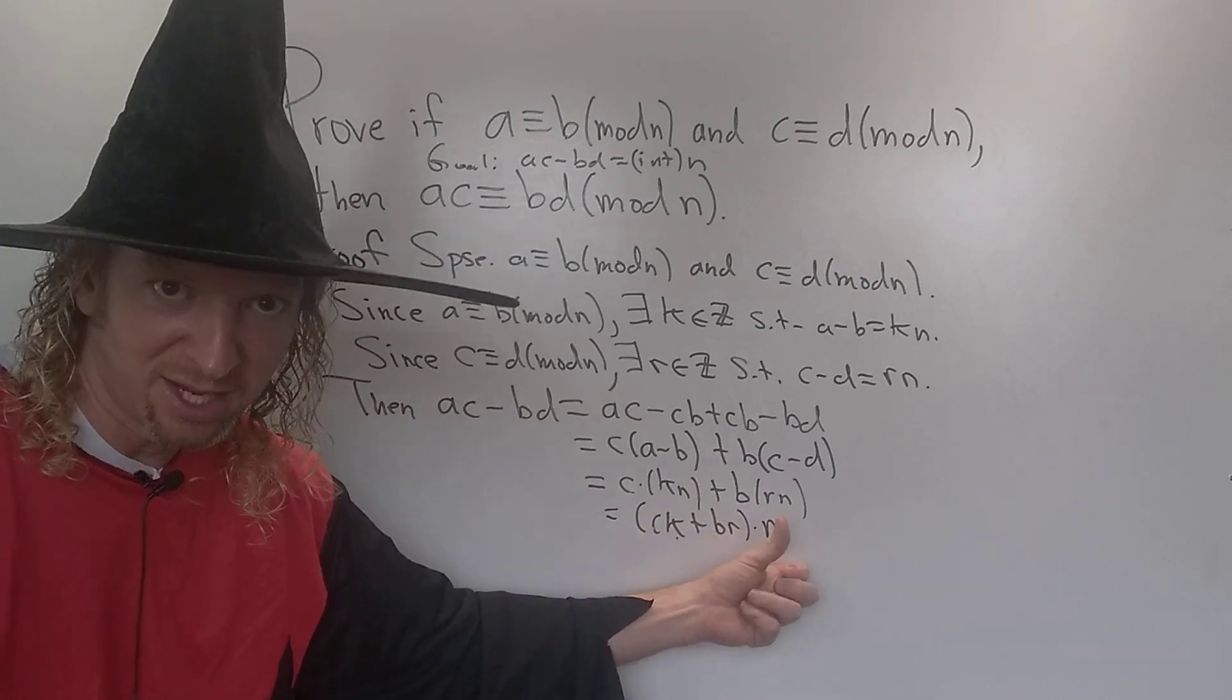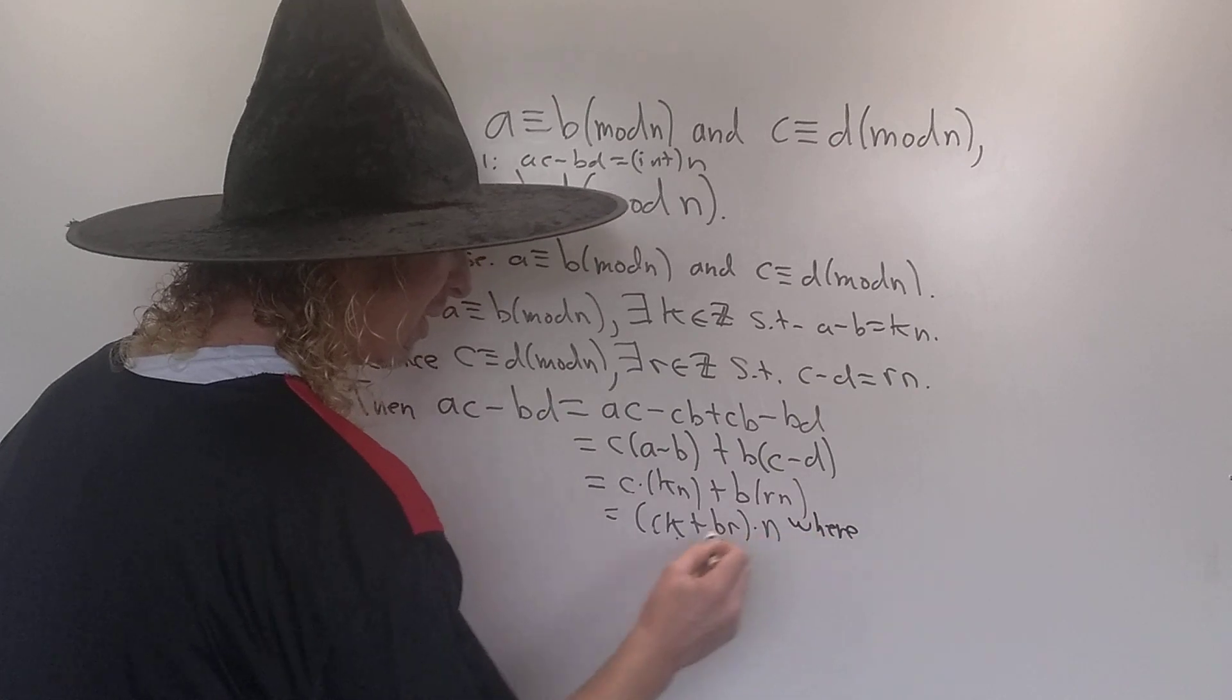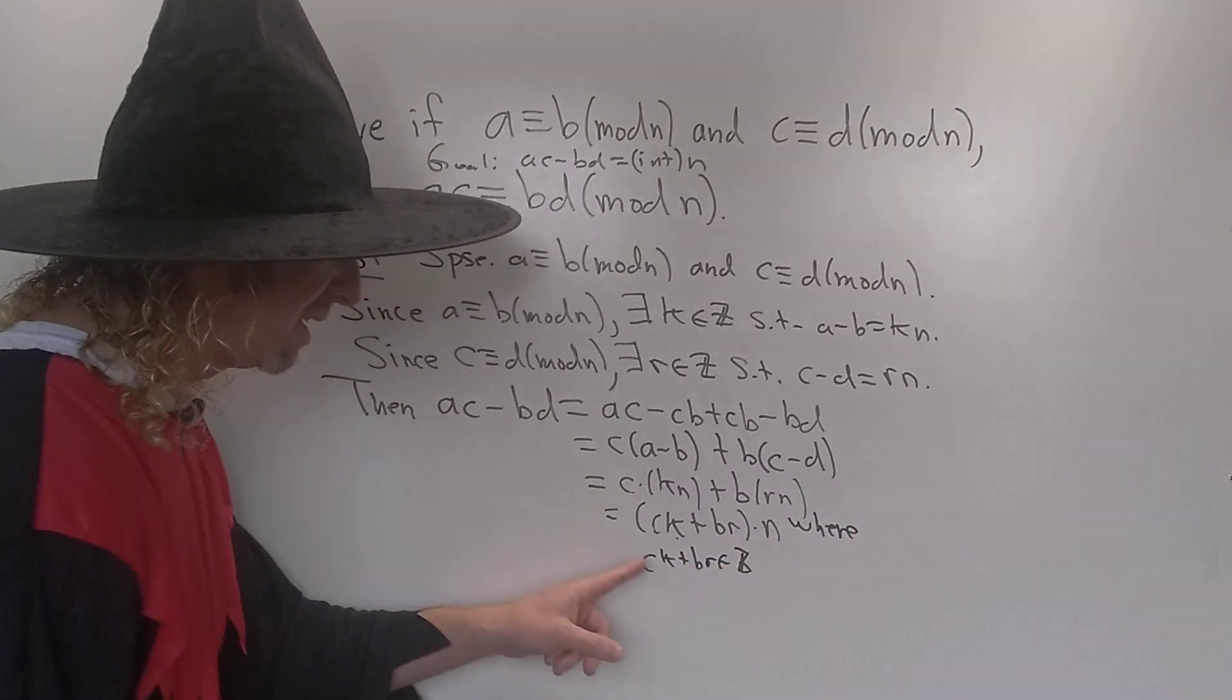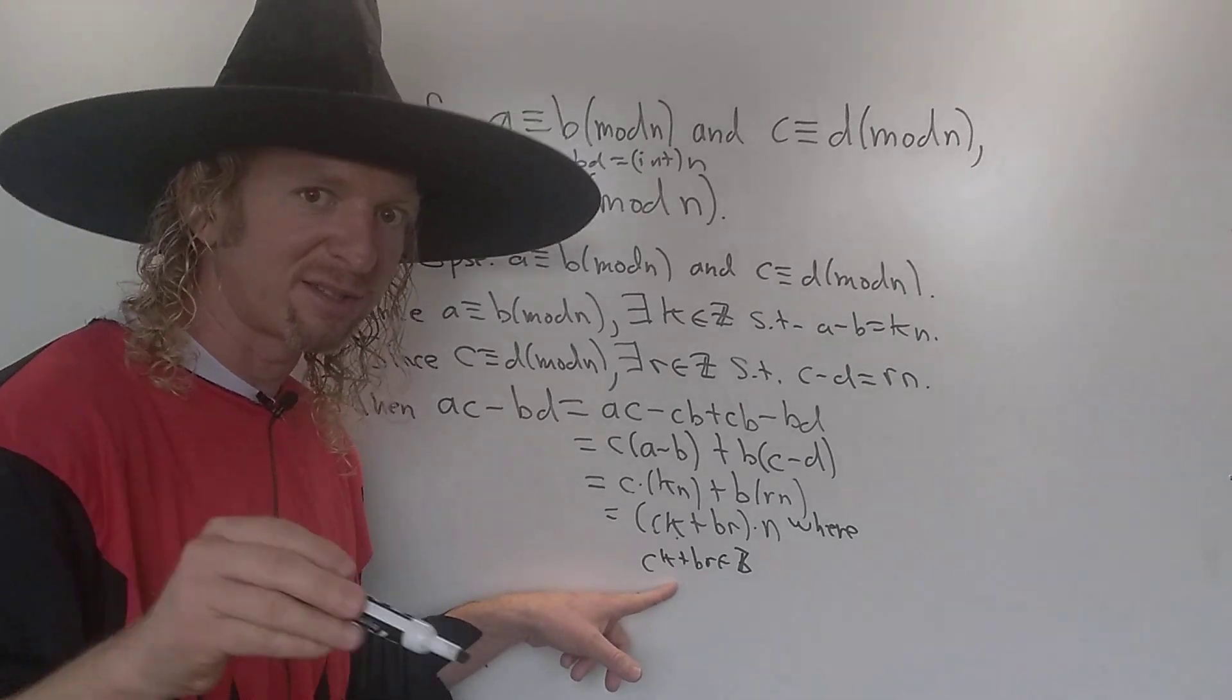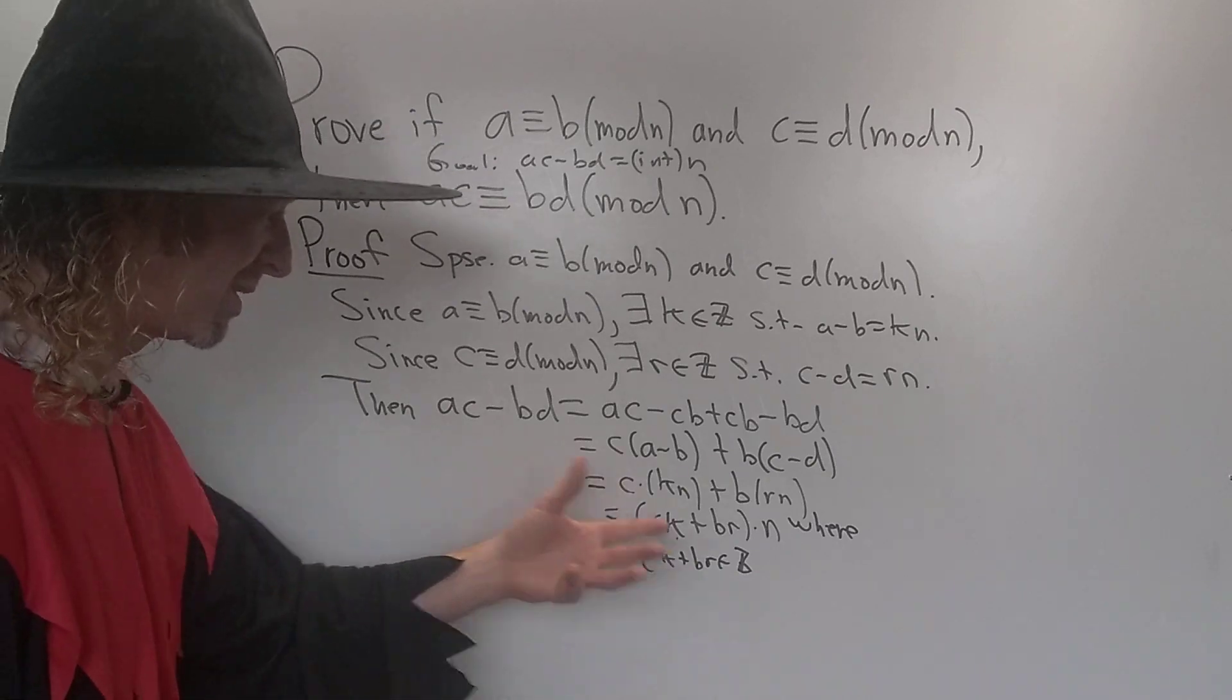Right, this is an integer times N. An integer times N. Why is this an integer? Well, let me just say it's an integer, then I'll tell you. Where CK plus BR is an integer. Why? C is an integer. K is an integer. Therefore, the product is an integer. B is an integer. R is an integer. Therefore, the product is an integer. The sum of integers is an integer. So it's an integer.